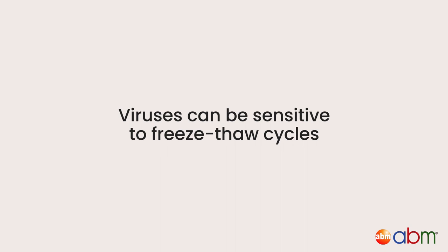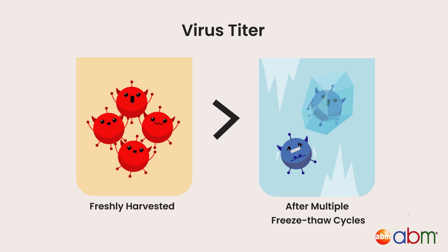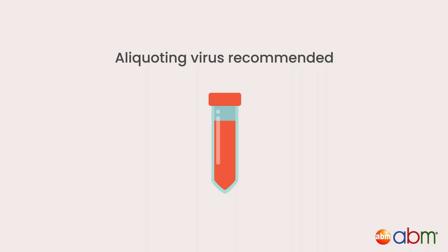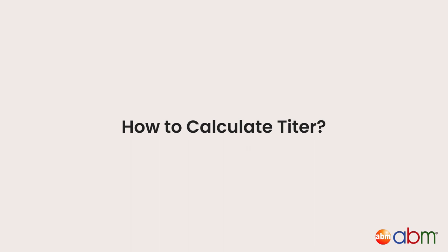Other considerations. Viruses can also be sensitive to freeze-thaw cycles, meaning that the titer of a recently collected sample can be much higher than if the same sample was stored in a freezer and thawed multiple times. To avoid losing viral titer due to excessive freeze-thaw cycles, it is recommended to aliquot the virus as soon as it is made and store at minus 80 degrees Celsius for long-term storage.